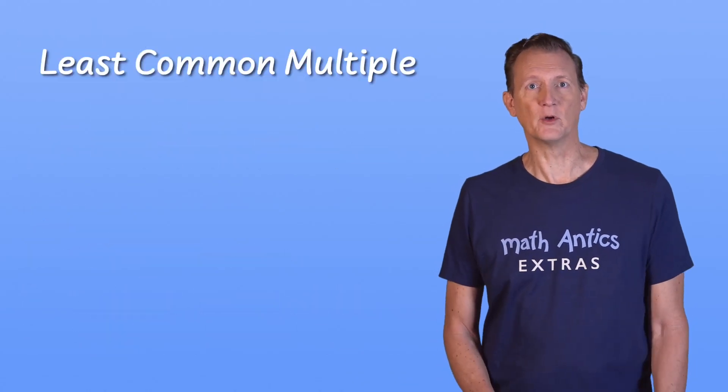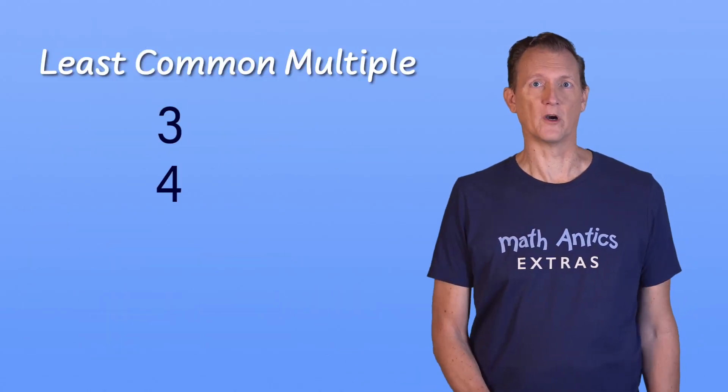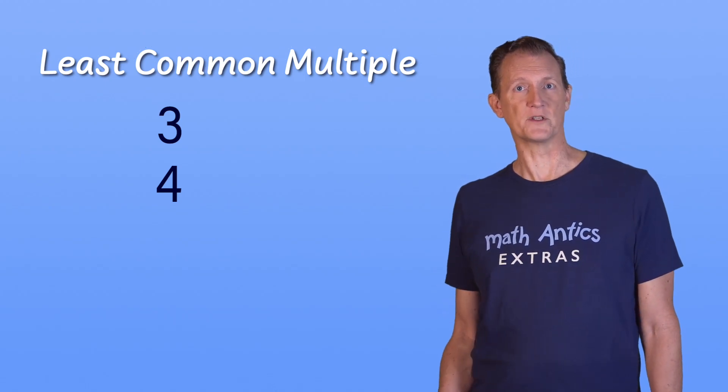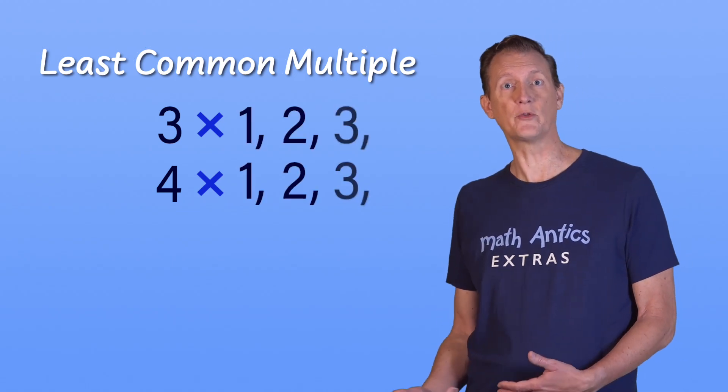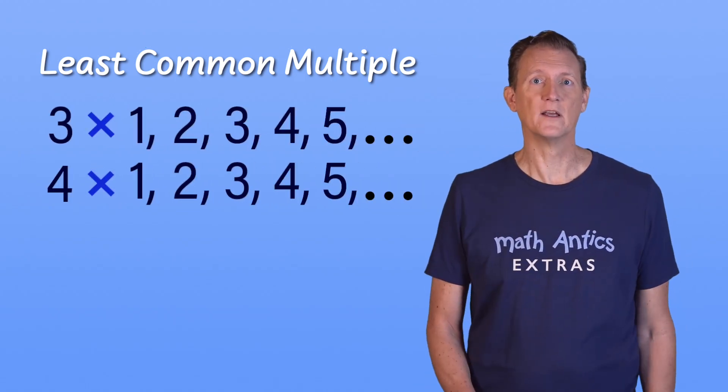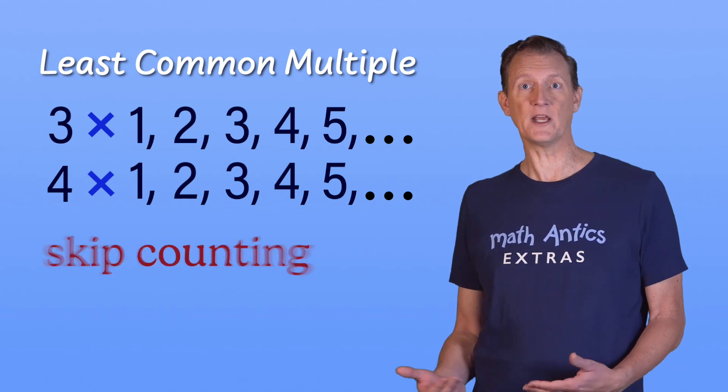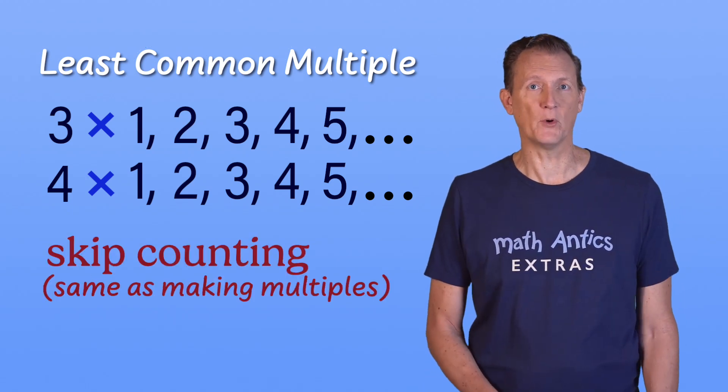Let's try finding the Least Common Multiple of these two numbers, 3 and 4. We'll start by making multiples of each number, which just means multiplying them by the sequence of whole numbers like 1, 2, 3, 4, 5, and so on. Or, if you remember how to do skip counting, that's the same as making multiples of a number.